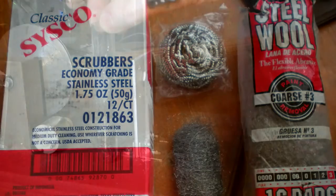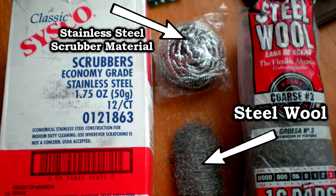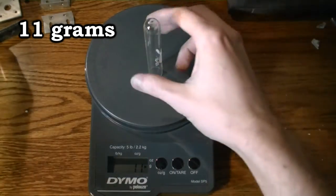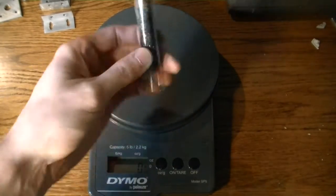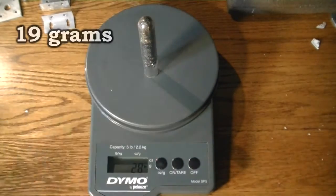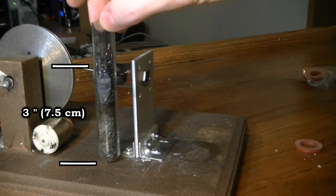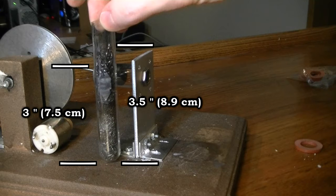Inside of the Pyrex test tube is steel wool and some stainless steel scrubber material. The weight of the metal material is eight grams. The weight is not important but the volume of the material makes a difference in the engine speed. The bulk of the metal material stops at three inches and it completely stops at three and a half inches.